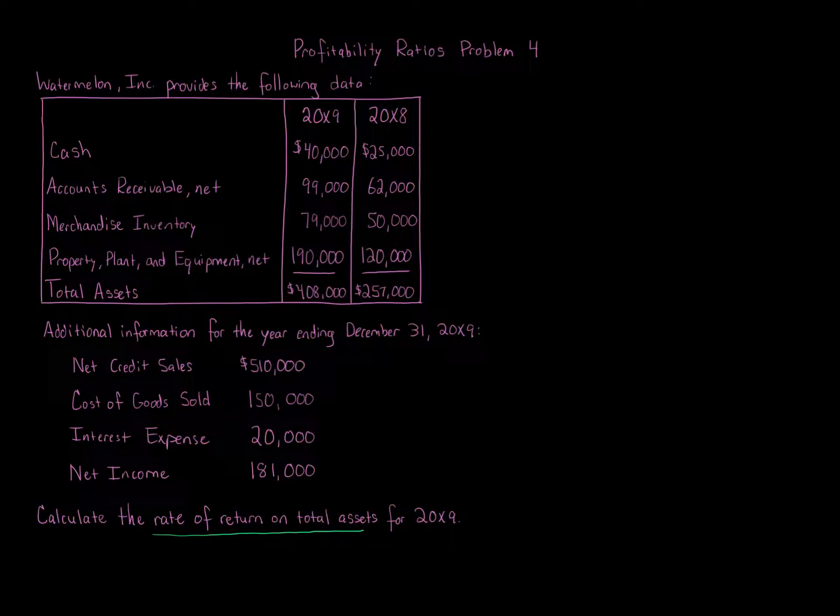Now there are many different ratios used in profitability analysis. We've got the ratio of net sales to assets, rate earned on total assets, rate earned on stockholders' equity, rate earned on common stockholders' equity. The difference there, of course, being preferred stock in one and preferred stock not in the other. Then we've got earnings per share, price to earnings ratio, dividends per share of common stock, and the dividend yield.